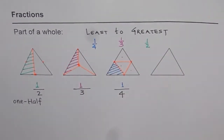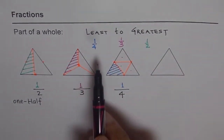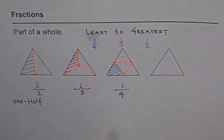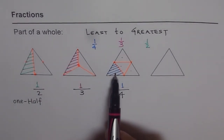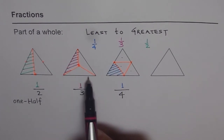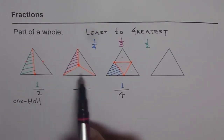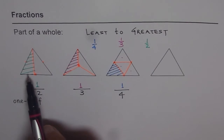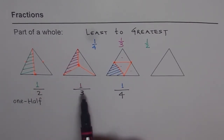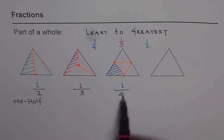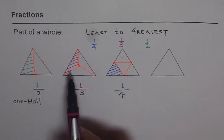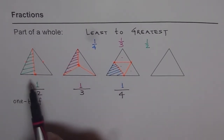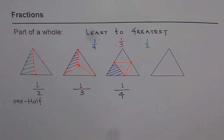That is how you can arrange fractions from least to greatest. The trick is to see how much has been shaded for equal shapes. We take three equal triangles and compare: one out of two, one out of three, and one out of four. You can clearly see one over four is least, one over three is greater than one over four, and one over two is greatest.